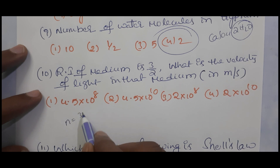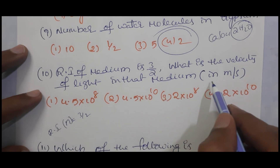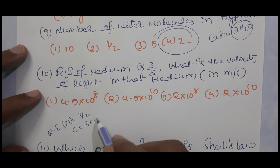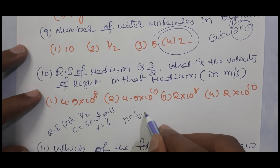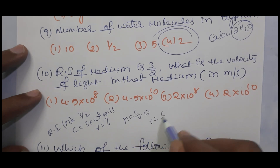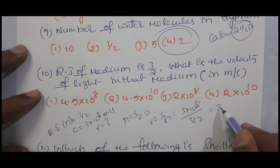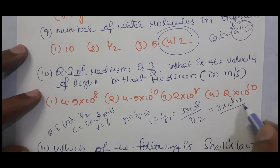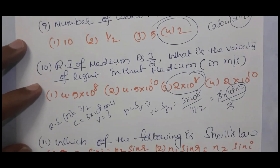Refractive index is 3/2. Refractive index is denoted by n. Speed of light in vacuum is 3×10⁸ m/s. We want to find the speed of light in the given medium using the formula n = c/v, which gives v = c/n. So v = (3×10⁸) / (3/2) = 3×10⁸ × (2/3) = 2×10⁸ m/s.